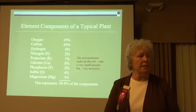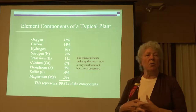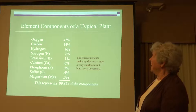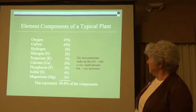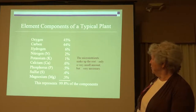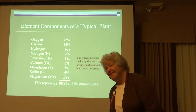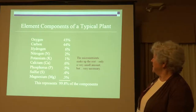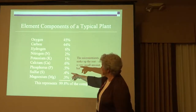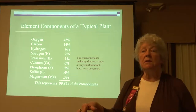You've taken your soil class, so you know what's in your soil and what kind of soil you have — about tilth, depth, and so on. A typical plant is composed of these elements, about 99.8% accounted for. Where did plants get the potassium, calcium, phosphorus, sulfur, magnesium, and so on? From the minerals in the soil.